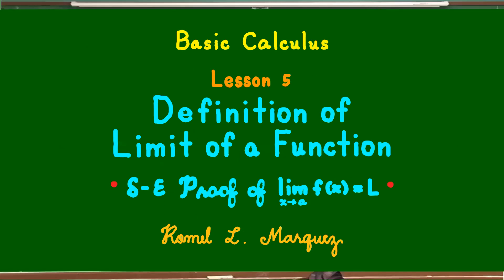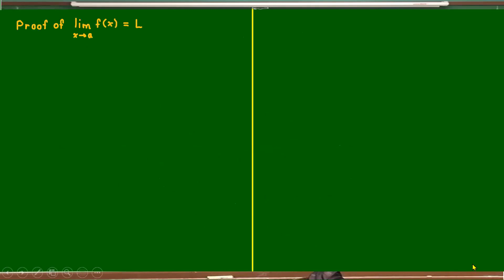Good day, guys. Today, I'll be discussing some exercises on the delta-epsilon proof of the statement: limit of f of x as x approaches a is equal to l. Proof of limit of f of x as x approaches a is equal to l using the delta-epsilon definition of limit of a function.